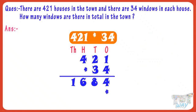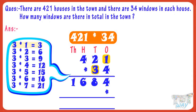Now put a multiplication sign below the ones place digit of the product. Now multiply 421 with the tens digit, that is 3. 3 multiplied by 1 equals 3. Write 3 in the product starting at tens place. 3 multiplied by 2 equals 6. Write 6 in the product at hundreds place. 3 multiplied by 4 equals 12. Write 12 in the product at the next place.